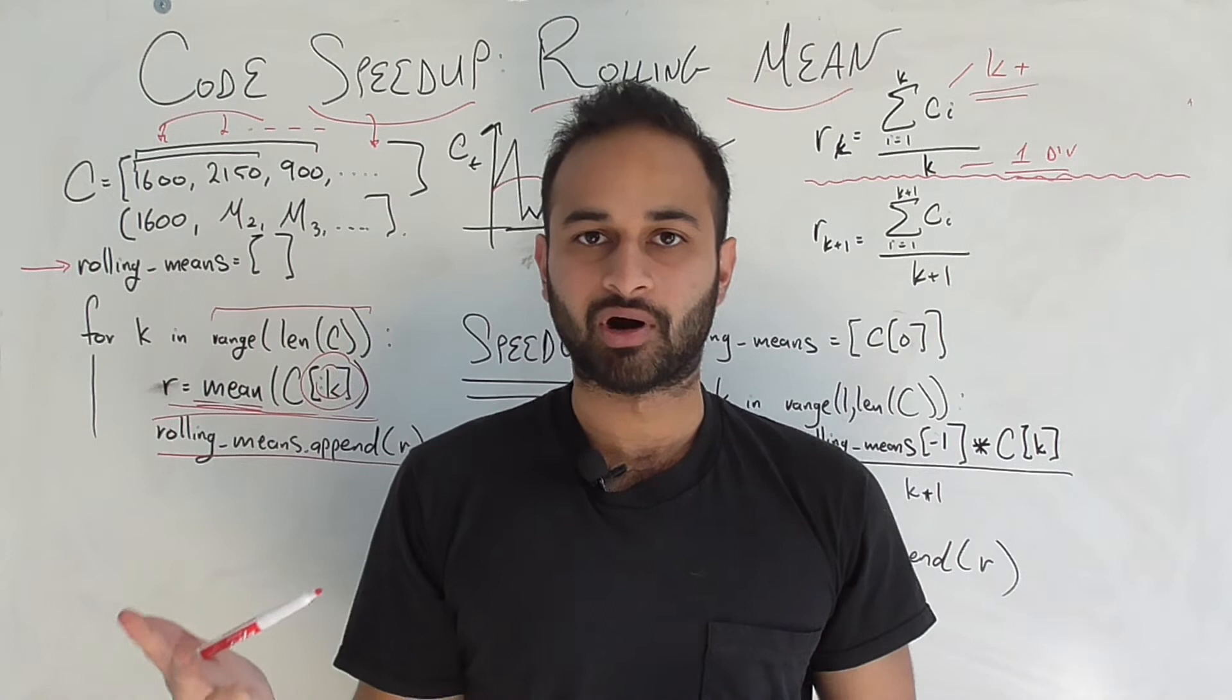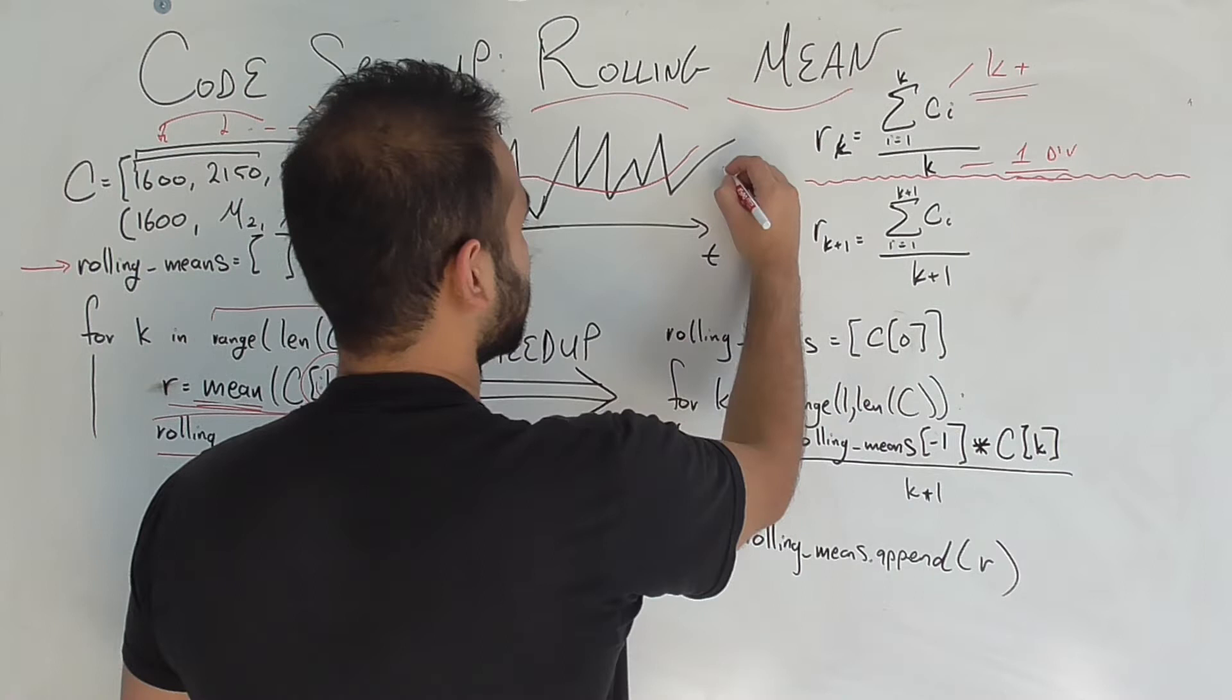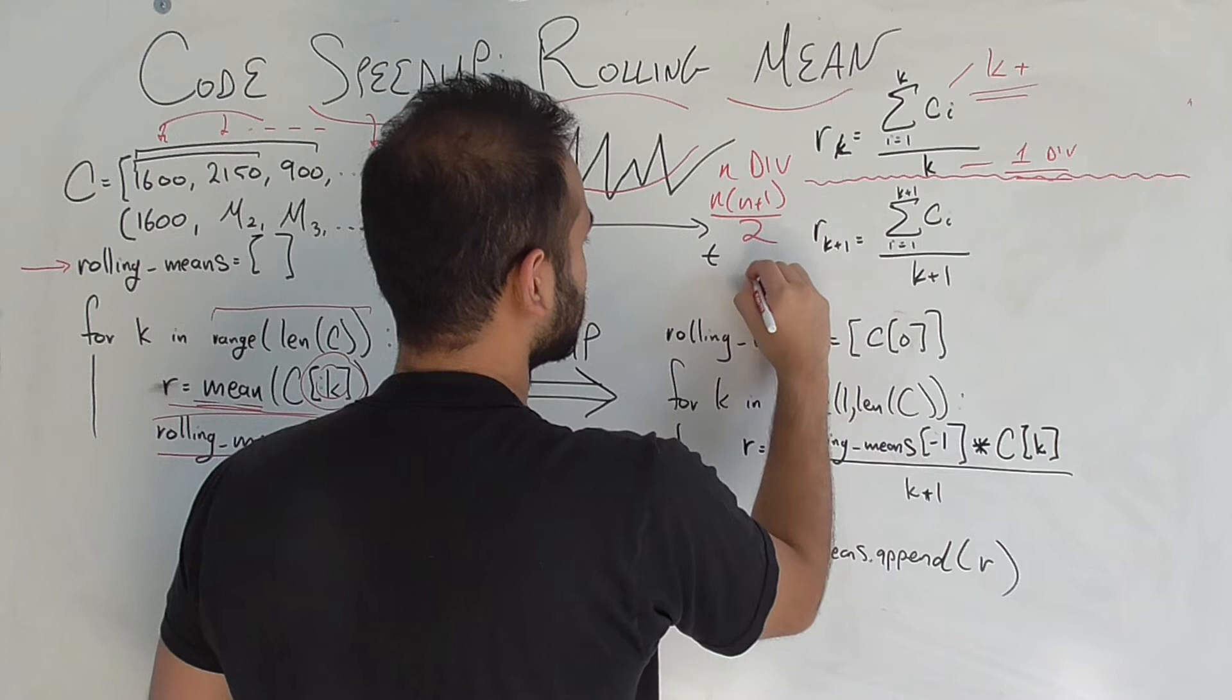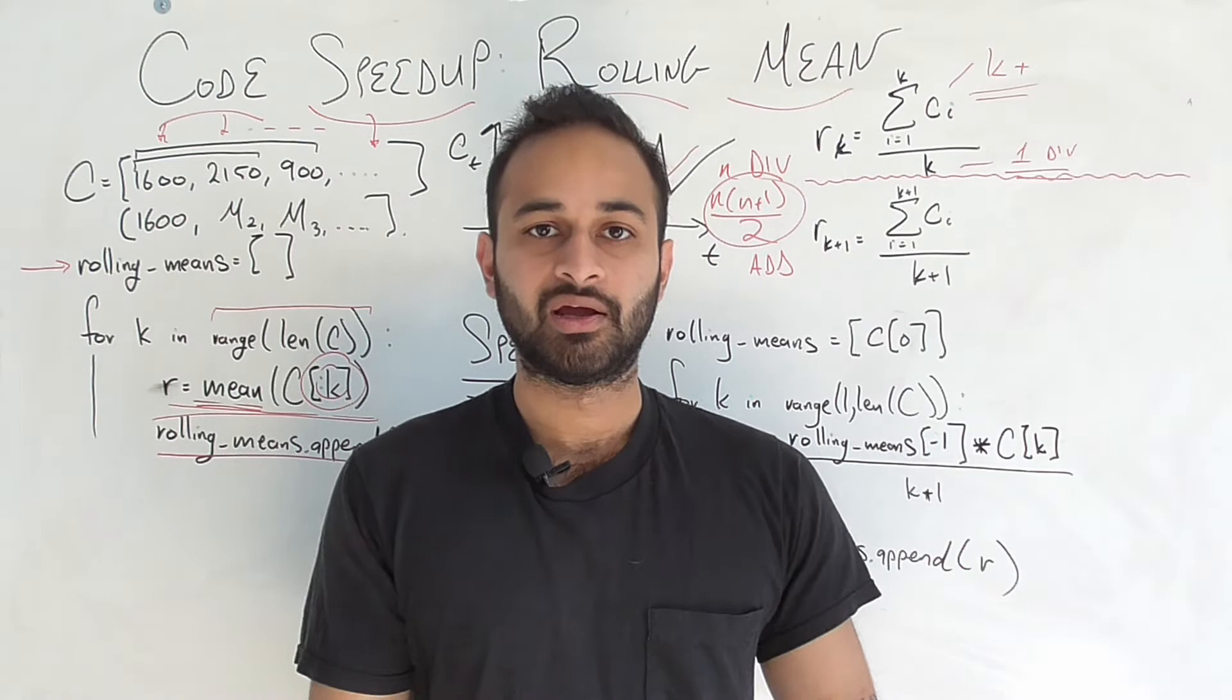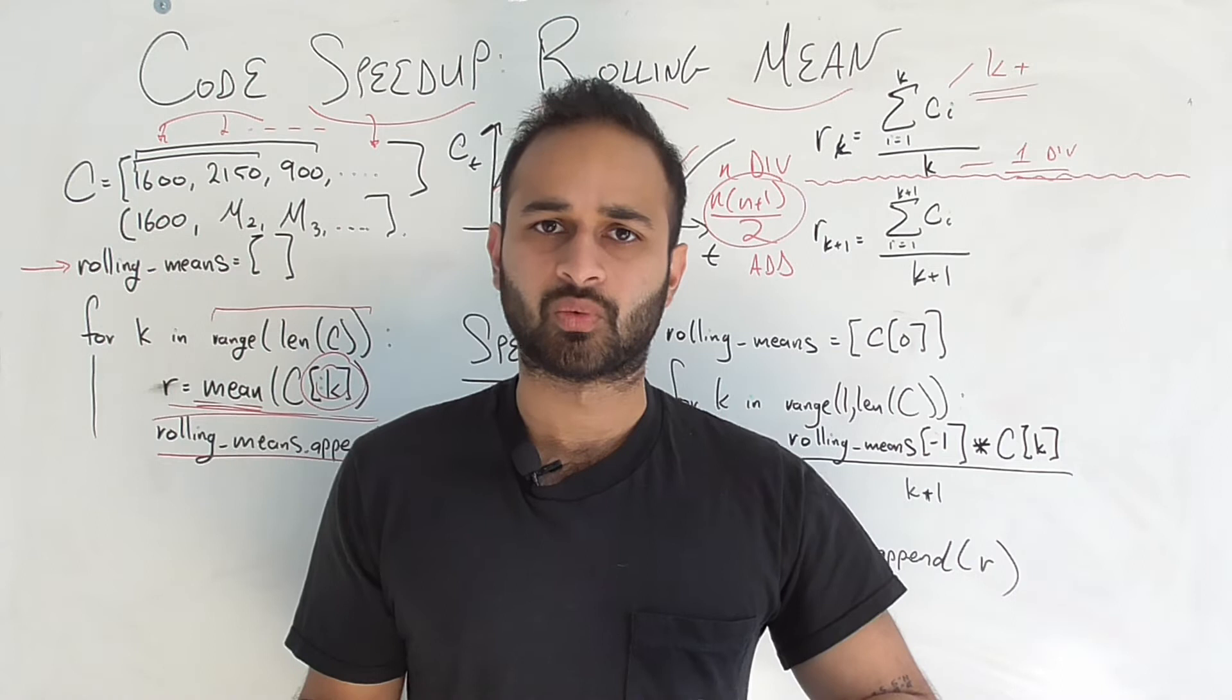Now, if we take k from one through two all the way to n, where n is the last day, then we have a total of n divisions. And we have n times n plus one over two additions. How did I get this? Well, it's basically just saying on the first day we have one addition, on the second day we have two additions, on the third day we have three additions, so I'm adding up one plus two plus three all the way to n. And if you remember that formula from your algebra classes, it's going to be n times n plus one over two.